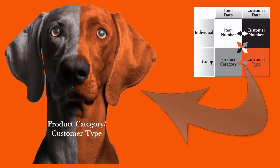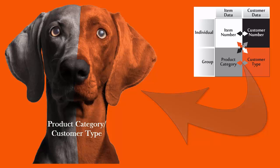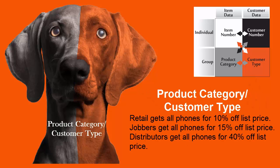The last pricing combination is Product Category and Customer Type. This would allow retail to purchase a product category, such as Phones, for a discount — say 10% off the list price. Jobbers could purchase Phones for 15% off the list price, while distributors could purchase the same Phones for 40% off the list price.